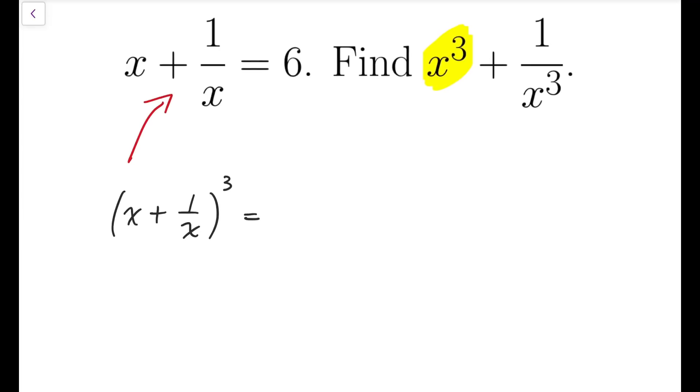I'm going to take it to cubed. And so with expanding, you will get x cubed plus 3 times x squared times 1 over x. This is actually from the binomial theorem.